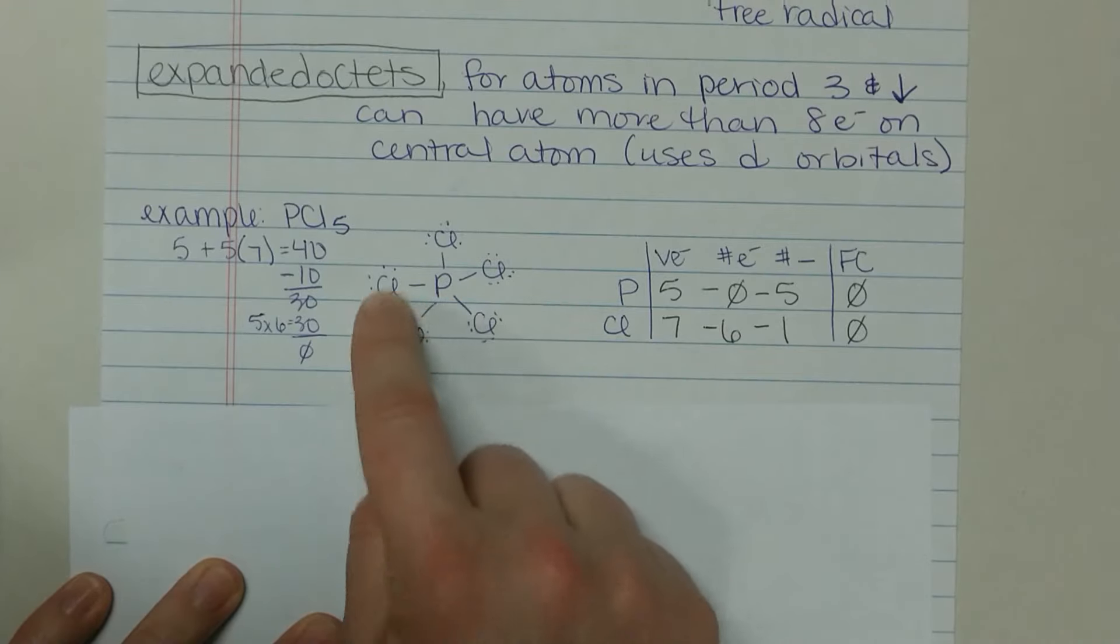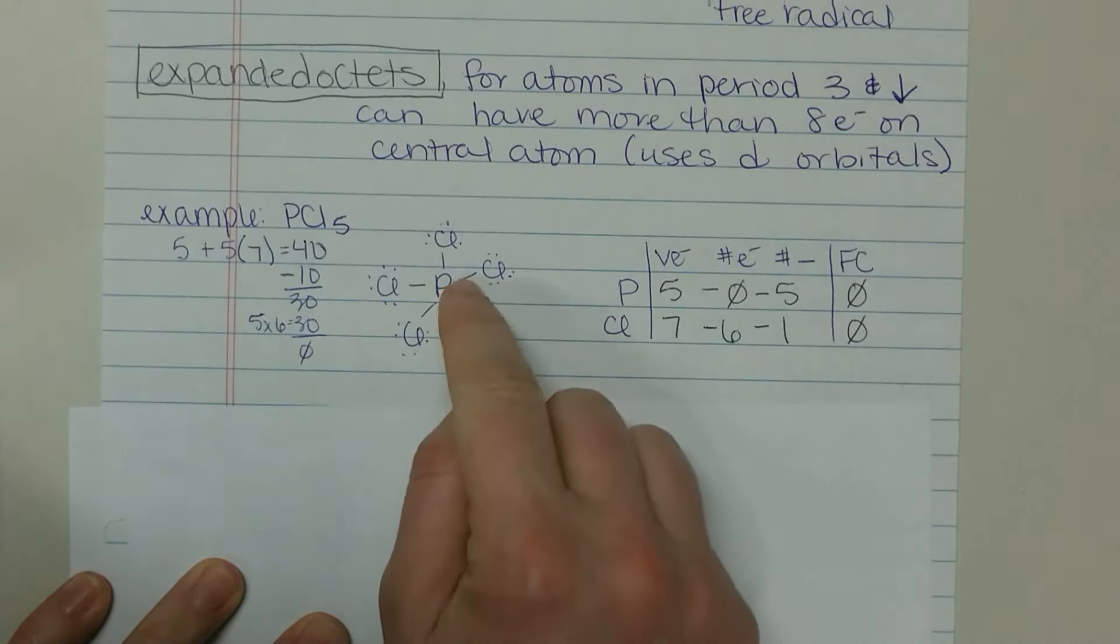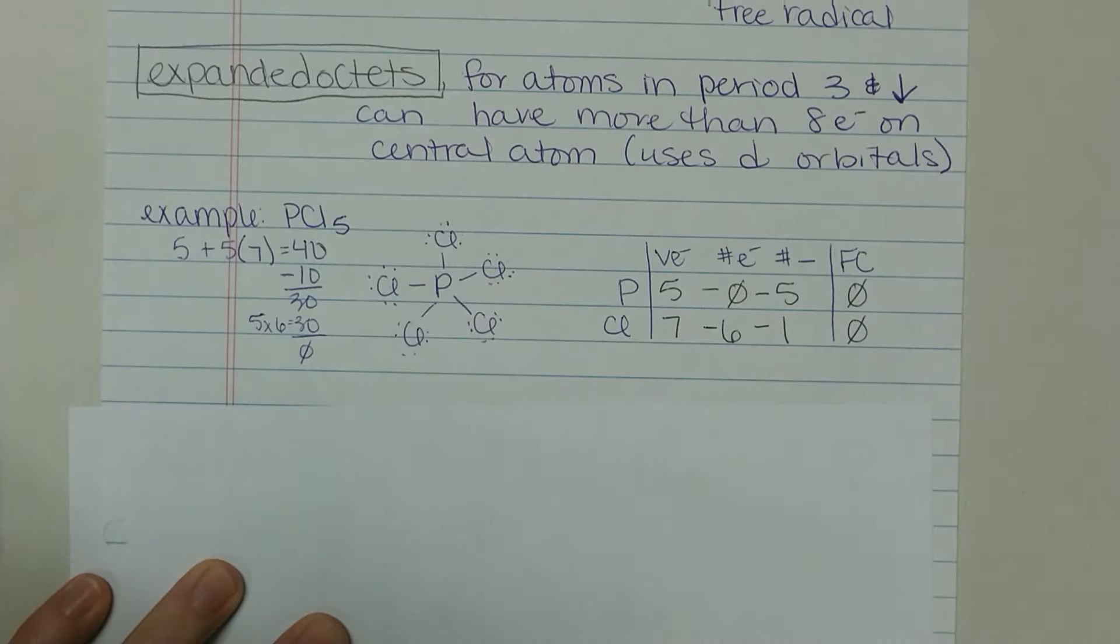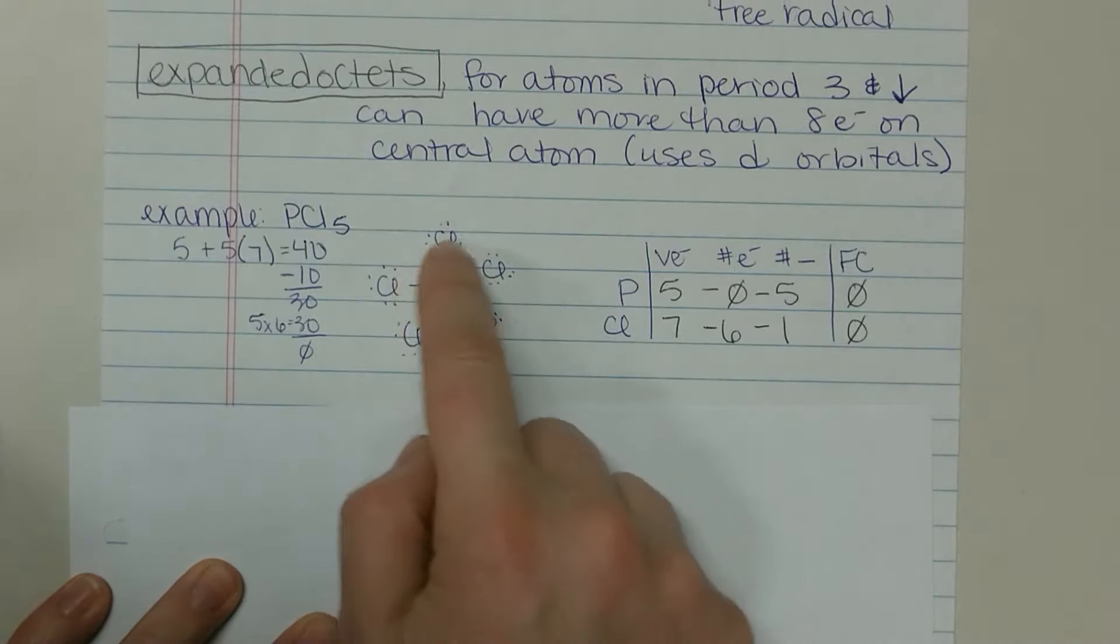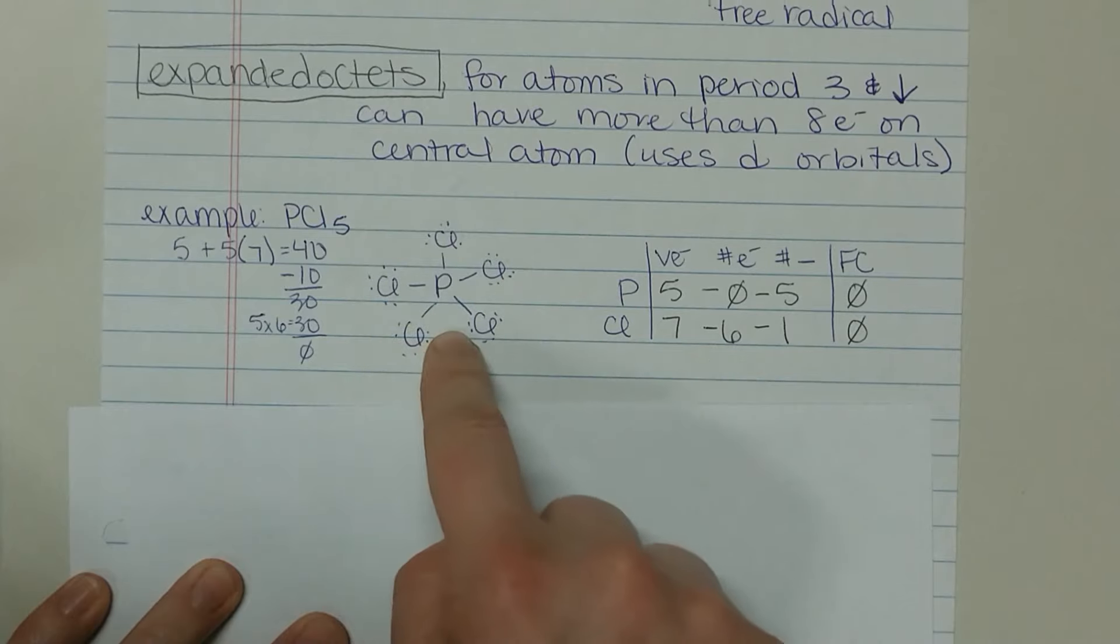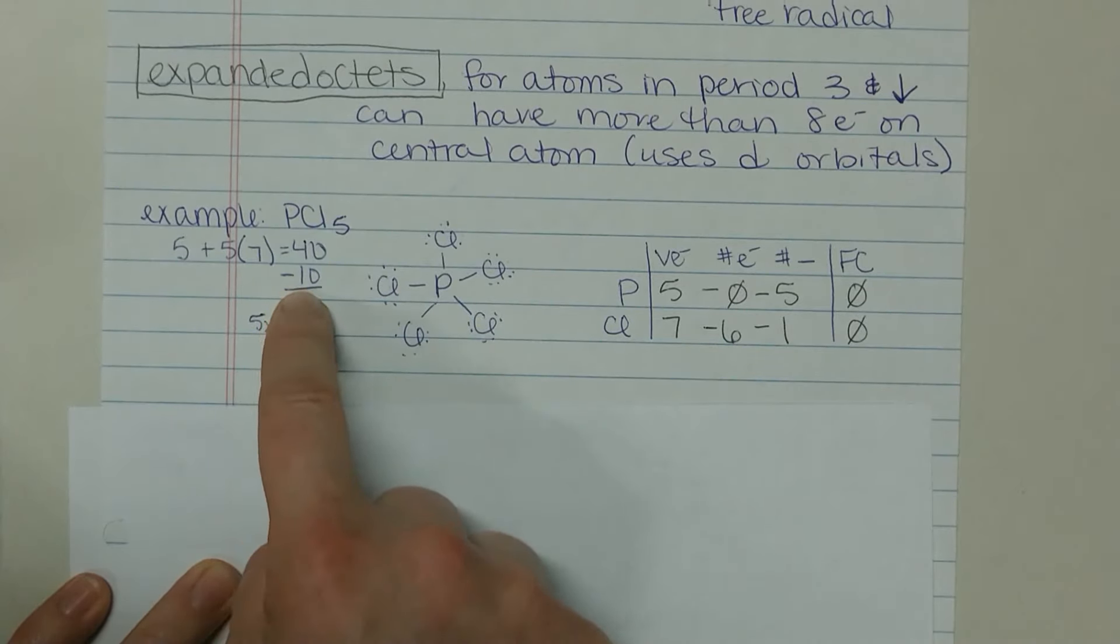That is where we can expand the octet. So as written here, phosphorus has two four six eight ten electrons around it, and phosphorus is okay with that. It has d orbitals that it can kind of tap into and utilize in that bonding. More on this, of how that happens, will be covered in chapter five. So then completing our octet on the chlorines.